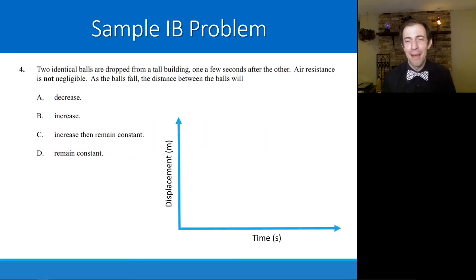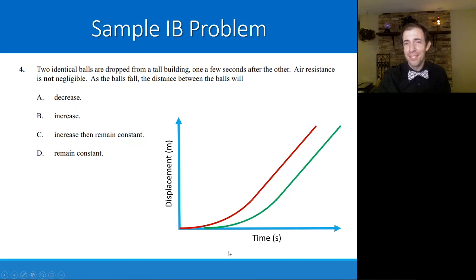Our last sample IB question. This is probably the trickiest one. You have two identical balls that are dropped from a tall building, one a few seconds after the other. Air resistance is not negligible. As the balls fall, the distance between the balls will decrease, increase, increase then remain constant, or remain constant. To help you think about this, if we have an object that's in terminal velocity, that graph looks something like this. It sped up until eventually hit that constant slope. If we dropped an object a few seconds later, we would get the same shape, just shifted over a little bit. Use this graph to tell me how is the separation changing or not changing as you are going across this time axis.